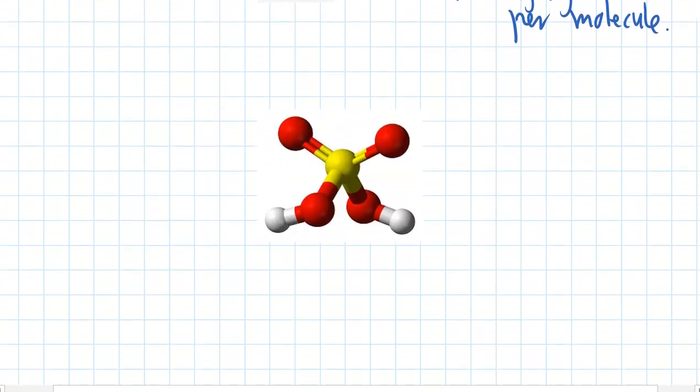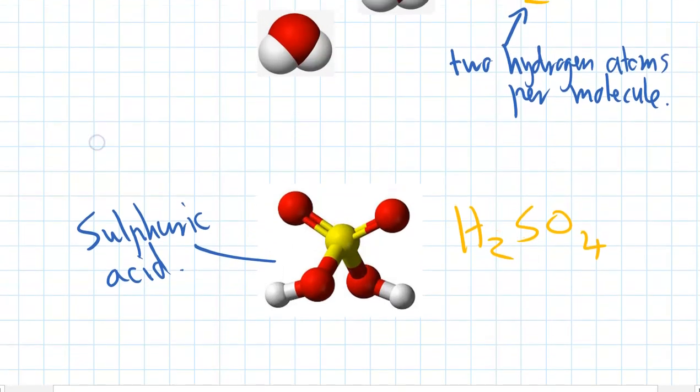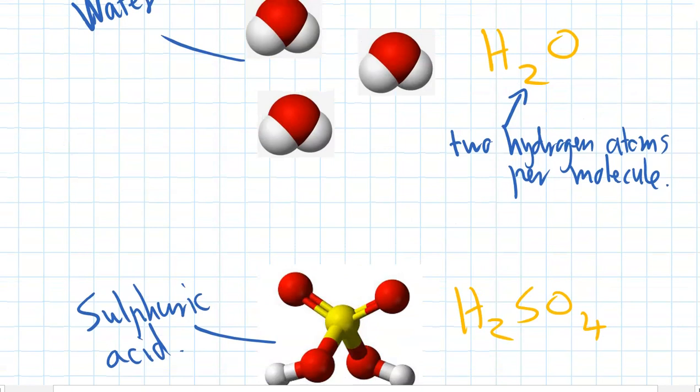And then molecules can be more complicated again. So this is actually sulfuric acid. We've got one sulfur atom in the middle, four oxygen atoms, and two hydrogen atoms. So the chemical formula of sulfuric acid is H2, because there's two hydrogens, and then SO4. So there's one sulfur and four oxygens. The actual order that we write the elements in does matter, but it's too much detail to go into now. It's really just about memorizing some common chemical formulas, and you get to know which order the elements tend to go in. Okay, so now we should be confident writing the chemical formulas for a whole lot of common elements and compounds.